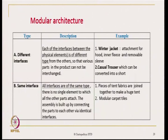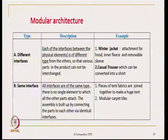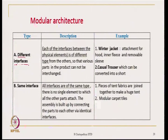Besides these, there could be modular architecture. We are all familiar with modular kitchens and modular sofa sets. Modularity is a very important aspect of design activity. In the modular architecture, each of the interfaces between the physical elements is of a different type from the others. There is one single piece to which other physical elements — which give different functions — can be joined. So there are different interfaces.